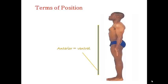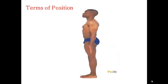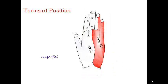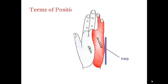Anterior, equivalent to ventral, is nearer to the front. Posterior, equivalent to dorsal, is nearer to the back. Superficial is nearer to the skin surface, and deep is away from the skin, nearer to the bones and muscles.